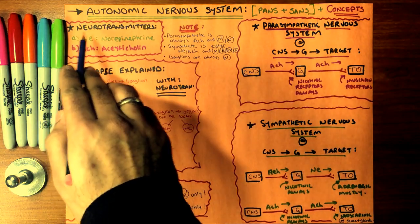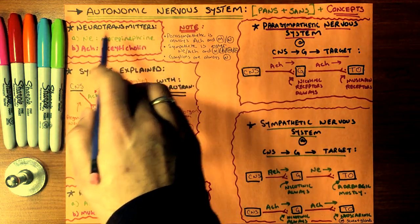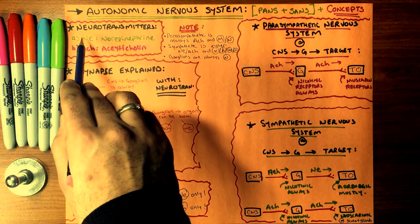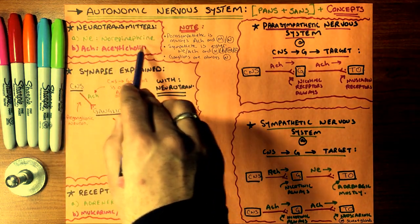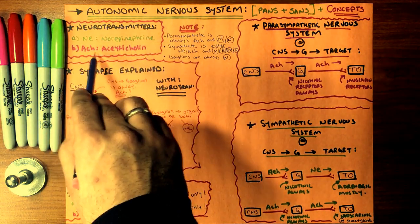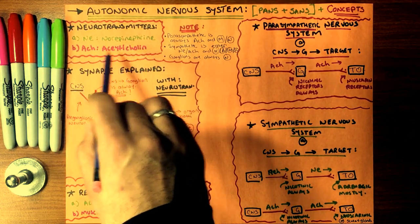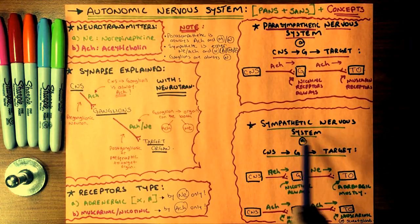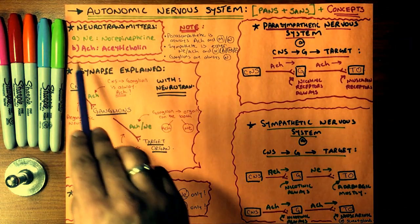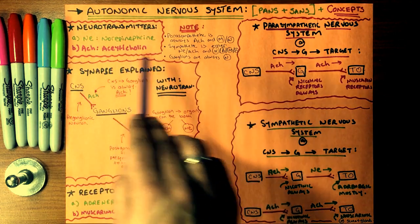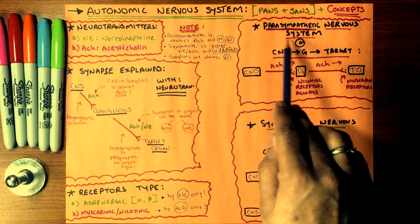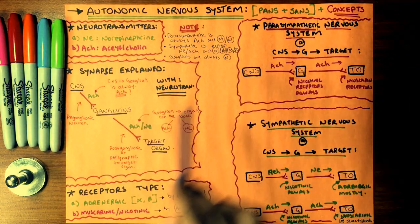There are two neurotransmitters: norepinephrine and acetylcholine. Norepinephrine is designated to the sympathetic nervous system, while acetylcholine is designated to the parasympathetic nervous system.